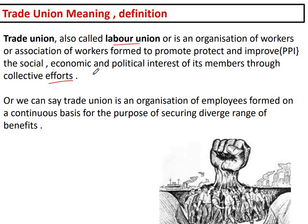Trade union is a corporation of workers formed to promote, protect and improve the interests of its members — you can remember this in PPI short form: to Promote, Protect and Improve. The trade union protects the social, economic and political interests of workers, and it always involves collective efforts.